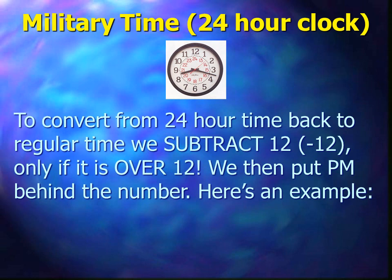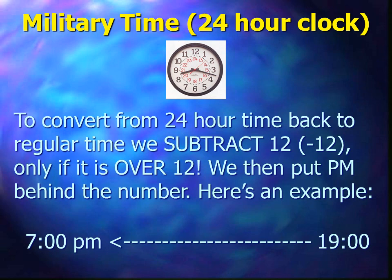Here's an example. If it is 1900 on the 24-hour clock, 1900 actually means 7 o'clock p.m., because 19 minus 12 equals 7.